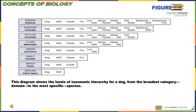Each category downward whittles away more and more organisms until we're getting more specialized. For example, at the class level — mammalia — organisms including dog, wolf, coyote, fox, lion, seal, mouse, human, whale, and bat all belong. Fish and snake are excluded. These can be further divided into the order carnivora: dog, wolf, coyote, fox, lion, and seal. Then family canidae — dog, wolf, coyote, and fox. Then genus brings us to dog, wolf, and coyote, and the species level narrows to just dog and wolf.